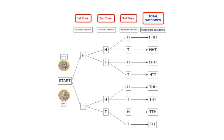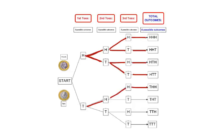Here are the possible outcomes when we put these combinations together: heads-heads-heads, heads-heads-tails, heads-tails-heads, heads-tails-tails, tails-heads-heads, tails-heads-tails, tails-tails-heads, tails-tails-tails. Counting them: 1, 2, 3, 4, 5, 6, 7, 8. We have eight possible outcomes.